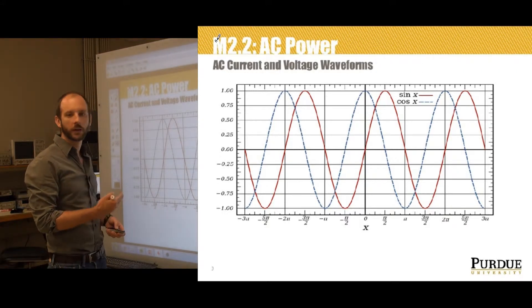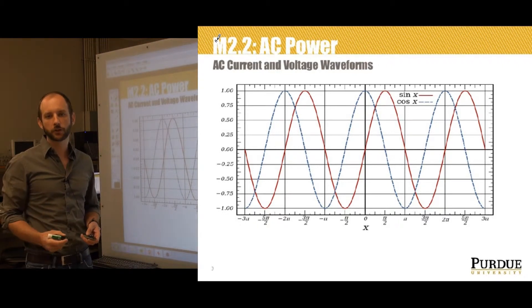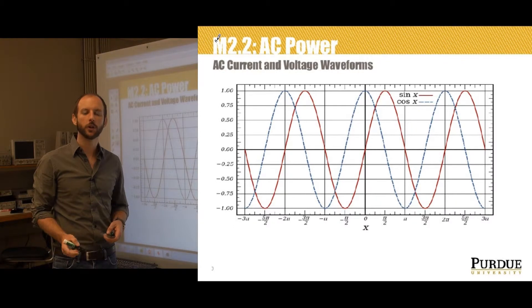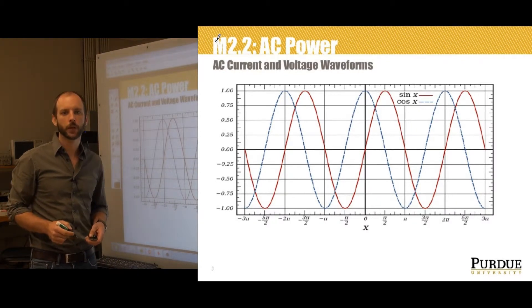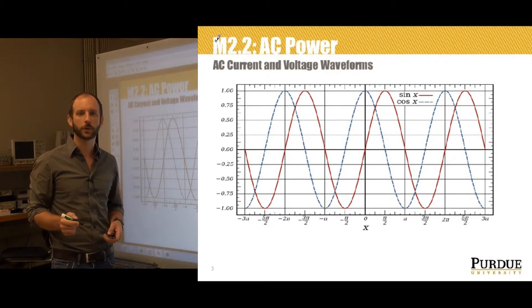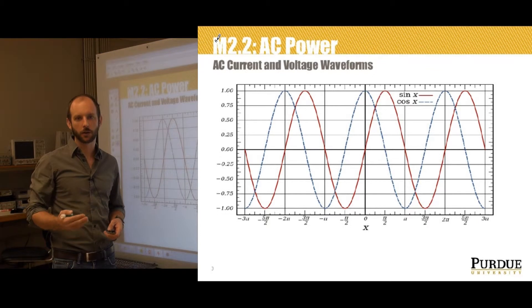So we can describe current and voltage in systems using sines and cosines. Although either function will work equally well, it's become convention in the power industry to utilize the cosine form. An important caveat regarding AC is that the AC voltages and currents are periodic in time, meaning that they repeat over regular time intervals.